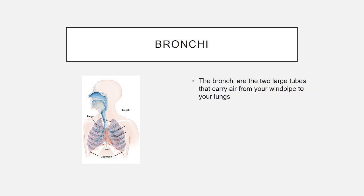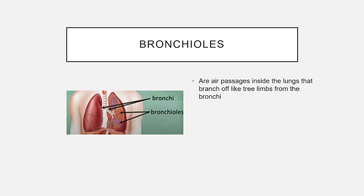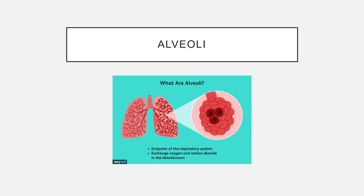Bronchi. The bronchi are two large tubes that carry air from your windpipe to your lungs. Bronchioles are passages inside the lungs that branch off like tree limbs from the bronchi.